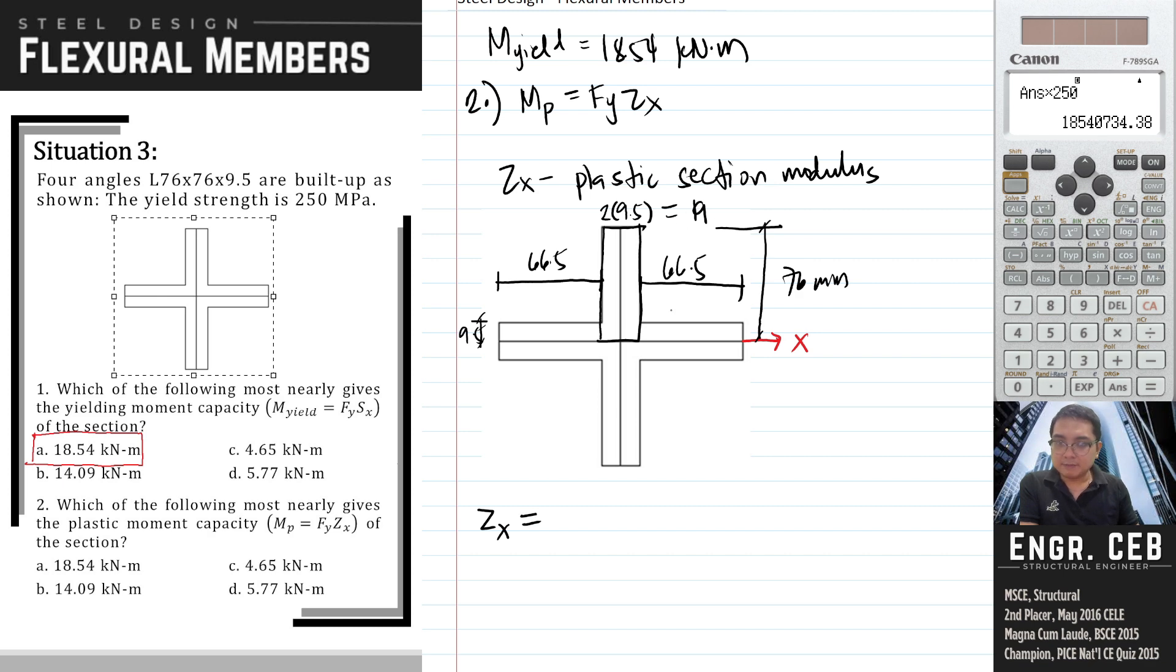Let's compute for Zx. We have 19 by 76, this is the area. If we take the moment of this area, the distance of the centroid of this area towards the x-axis is 76 over 2. How about the other two rectangles on the left and right side? We have 66.5 times 9.5, its distance towards the x-axis is 9.5 over 2.